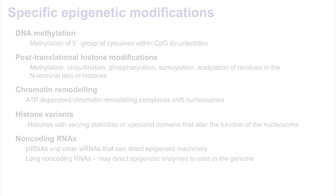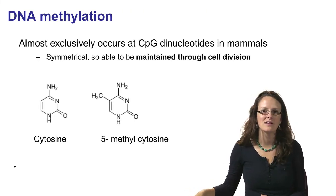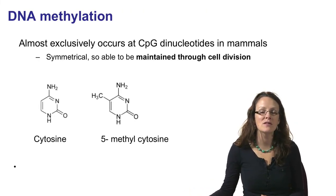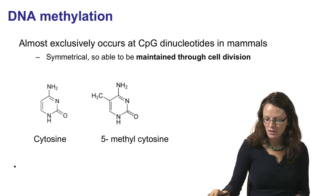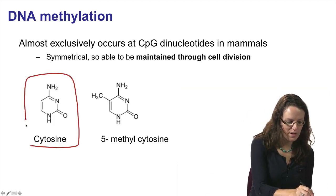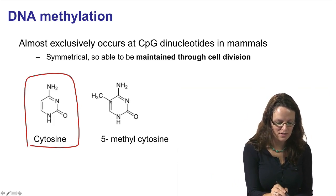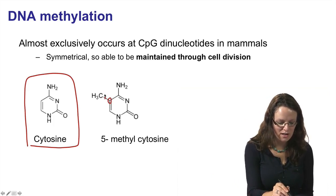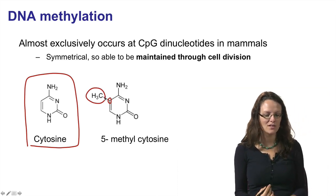We're going to start with DNA methylation. DNA methylation is the addition of a methyl group to the DNA, and this happens at cytosines. Here we're showing a cytosine single ring base, and we can add on a methyl group at the fifth carbon. The methyl group is a CH3 group that's added directly onto that base.